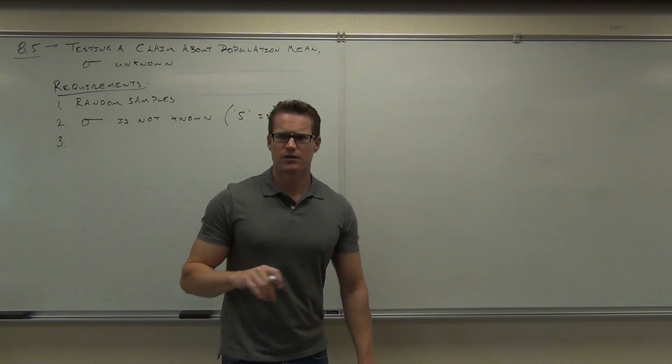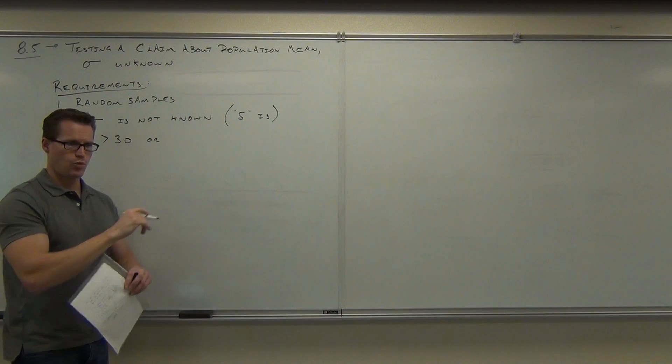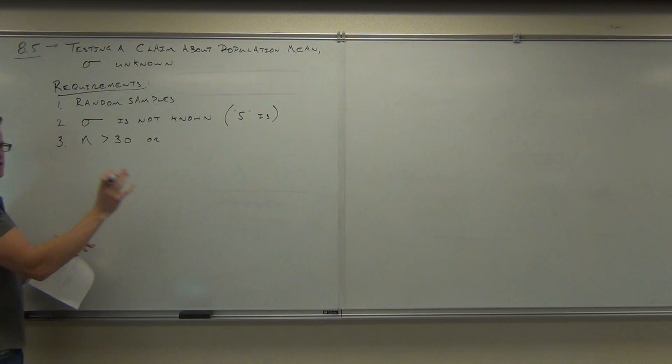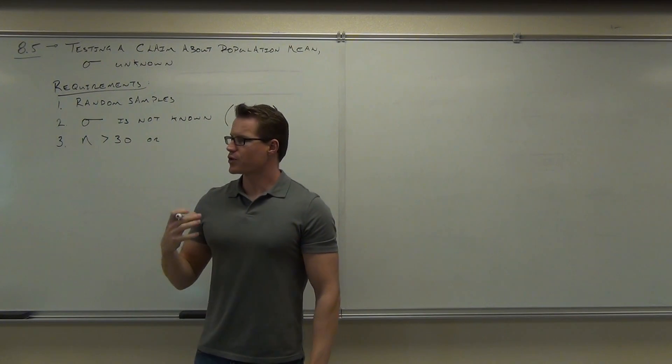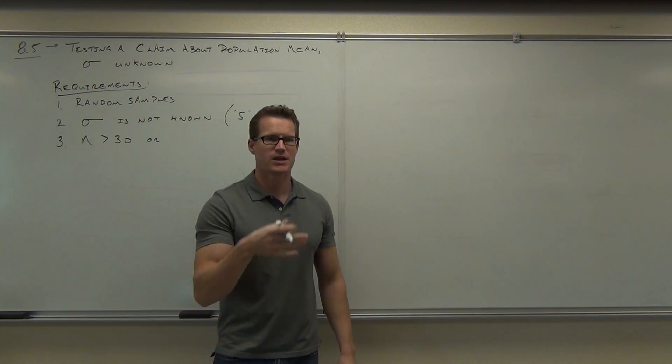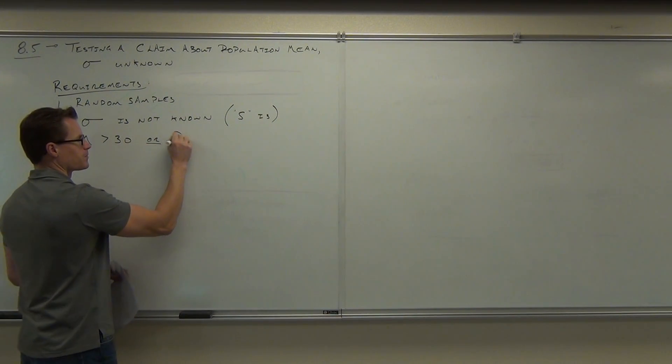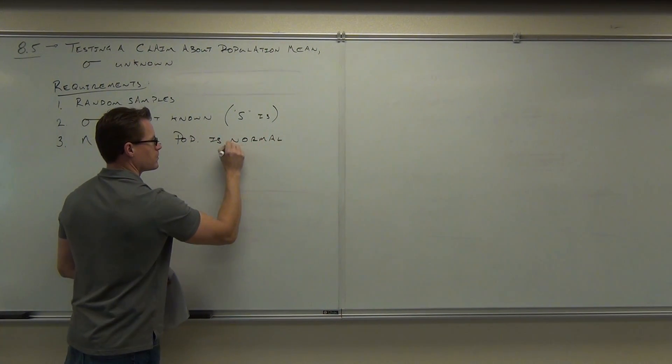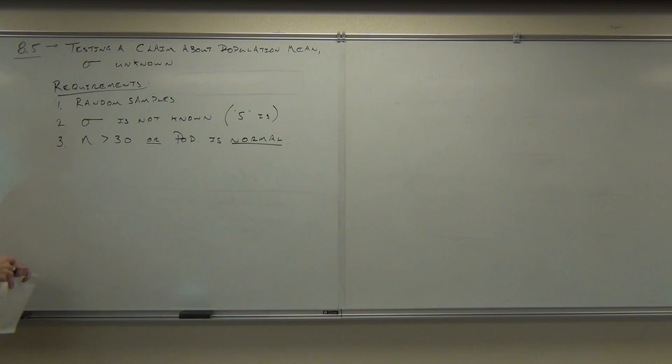Lastly, what was that magic number again? N was the sample size, it has to be what now? Or, what is normally distributed? The population. The population, that's right. So, either your sample size is more than 30, in which case it will fit a standard normal curve, or a normal distribution, or your population has to be normally distributed, because if you sample from that, you'll get another normal distribution when you consider your central limit theorem. So, N is more than 30, or the population is normal.